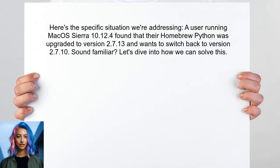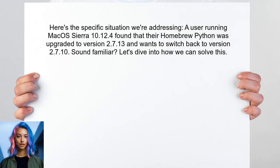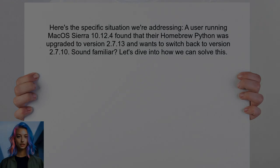Here's the specific situation we're addressing. A user running macOS Sierra 10.12.4 recently found that their Homebrew Python was upgraded to version 2.7.13, and they want to switch back to version 2.7.10. Sound familiar? Let's dive into how we can solve this.